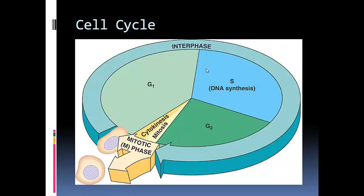How does the cell know when to stop making more DNA and make some centrioles? How does the cell know when to stop making centrioles and move on to mitosis? So we're going to put together this idea of cell communication — that different cells can talk to each other by sending chemical messages — with mitosis and the cell cycle, and how that's regulated or timed out.